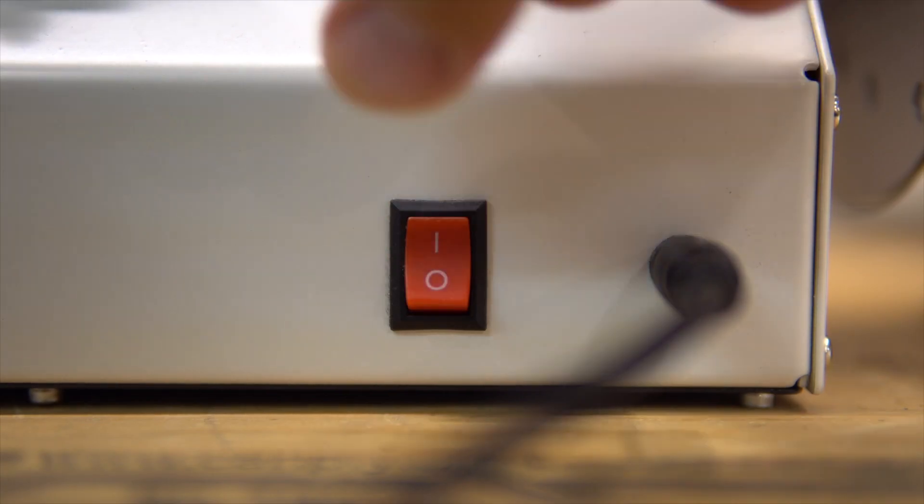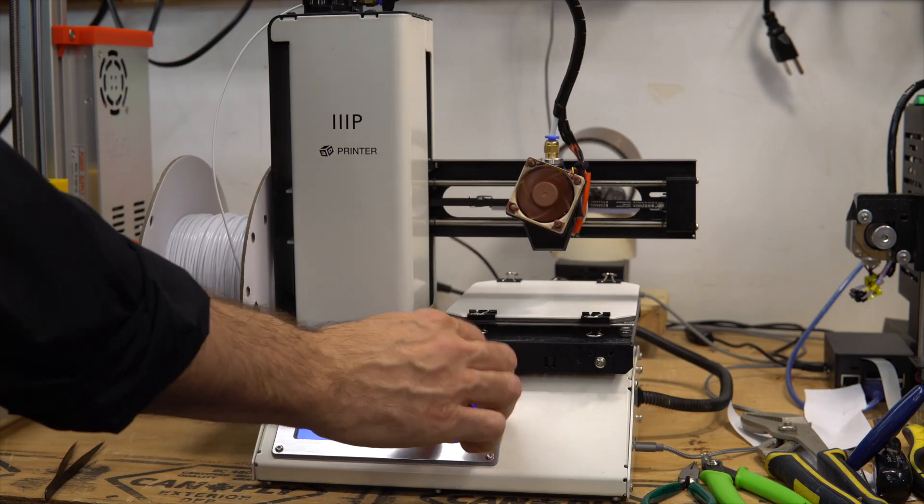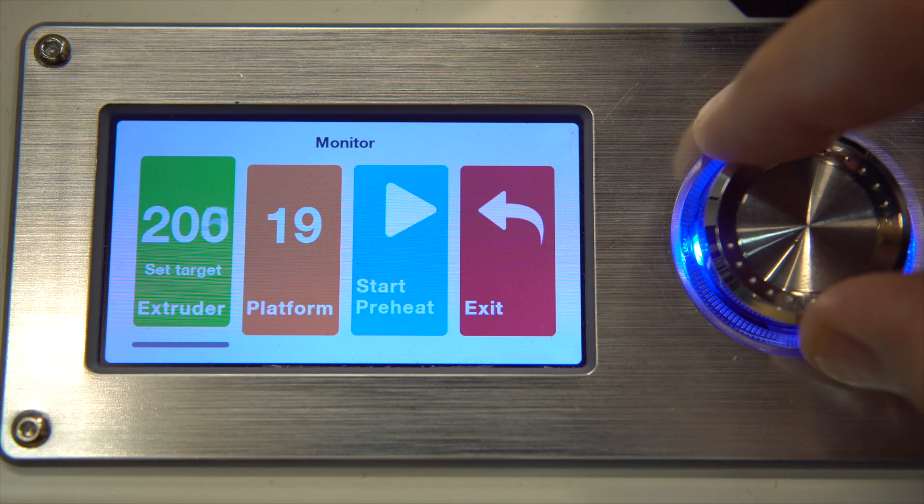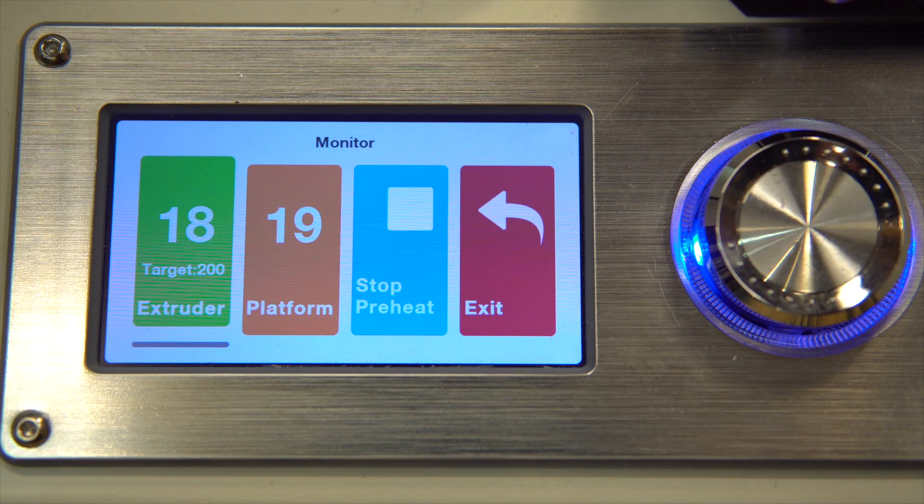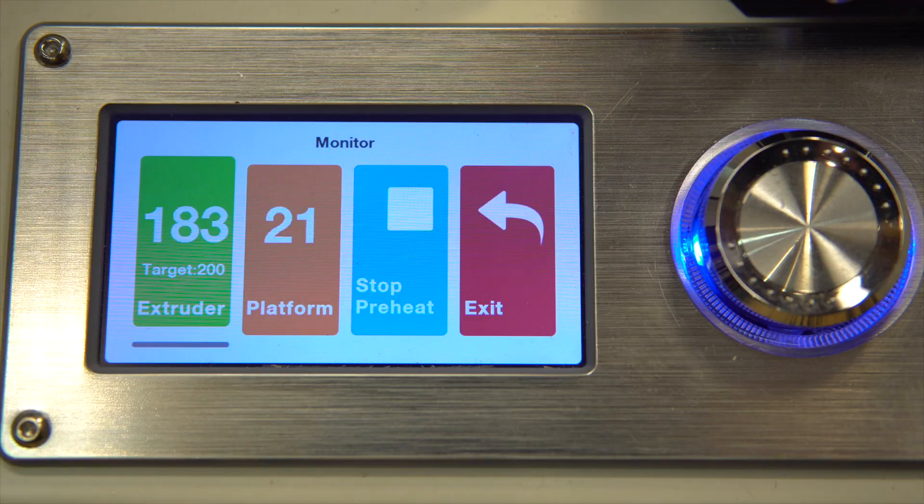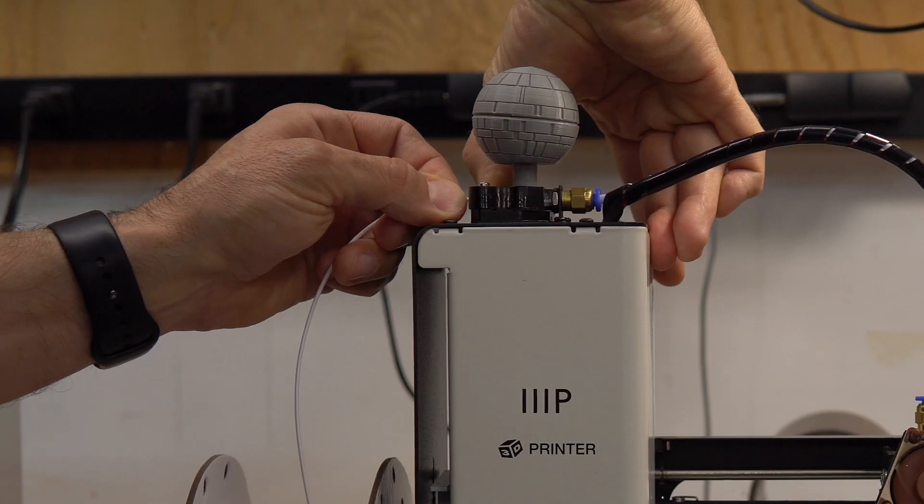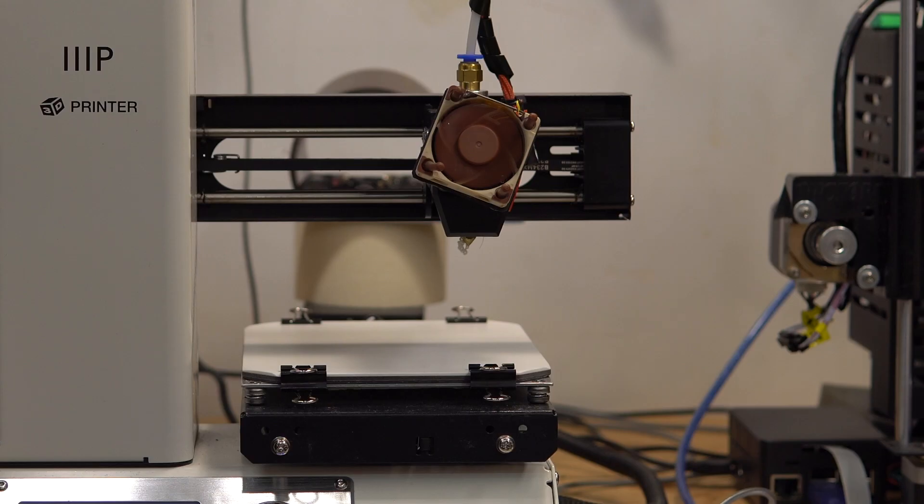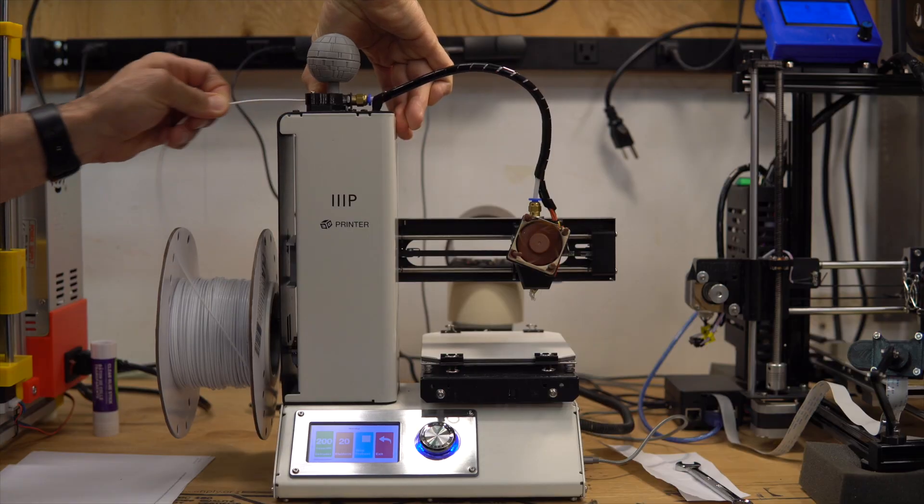First turn on the printer, then move up the arm and preheat at 200 for PLA. Then push some filament through so that you can pull out the filament.